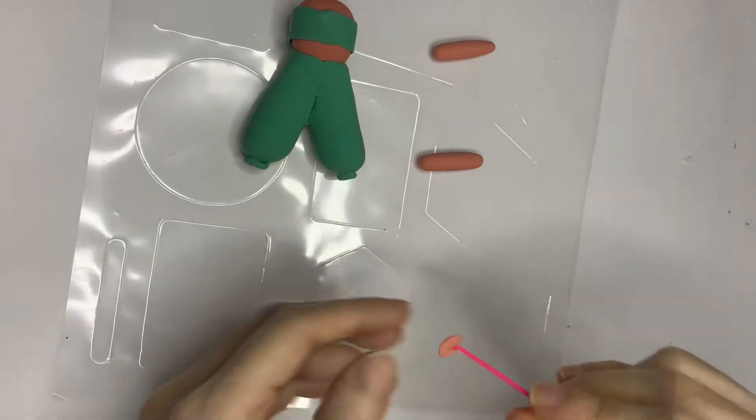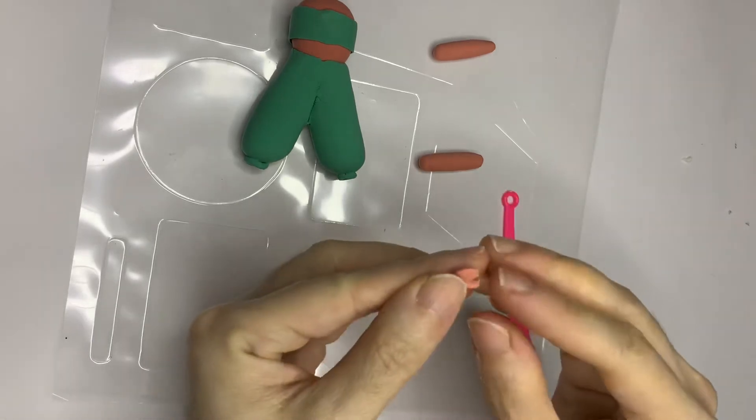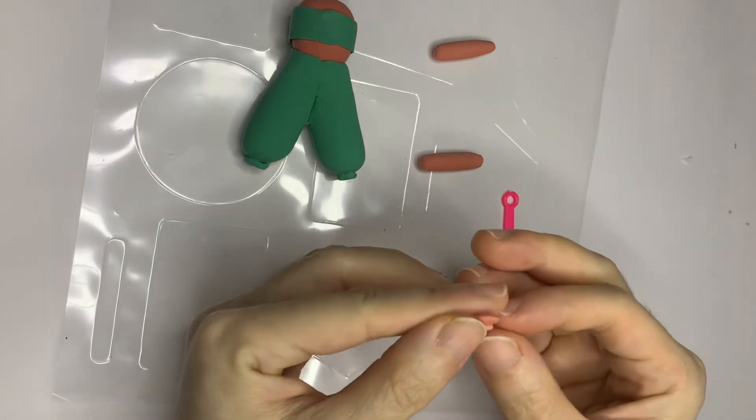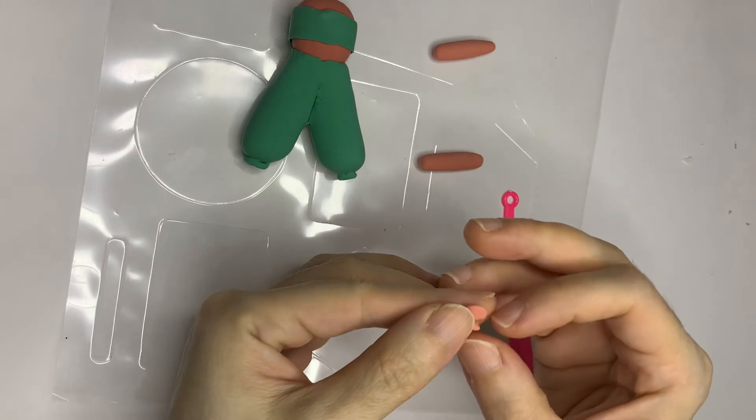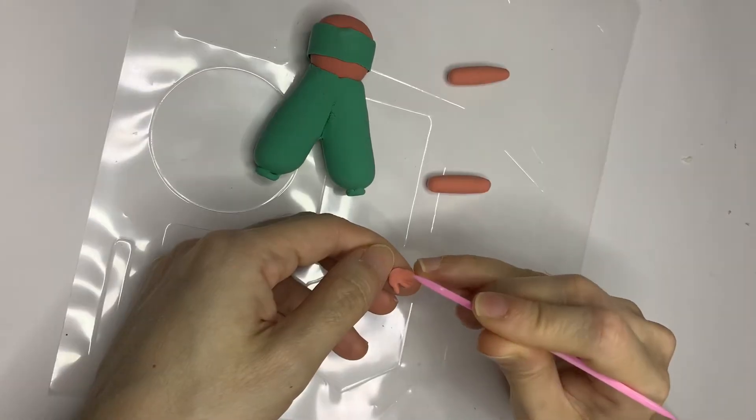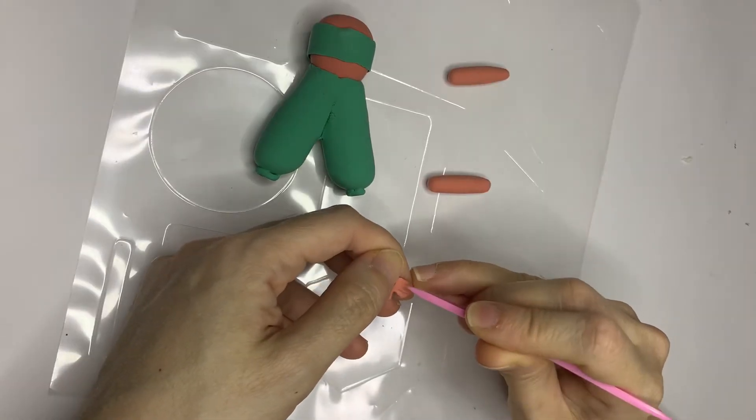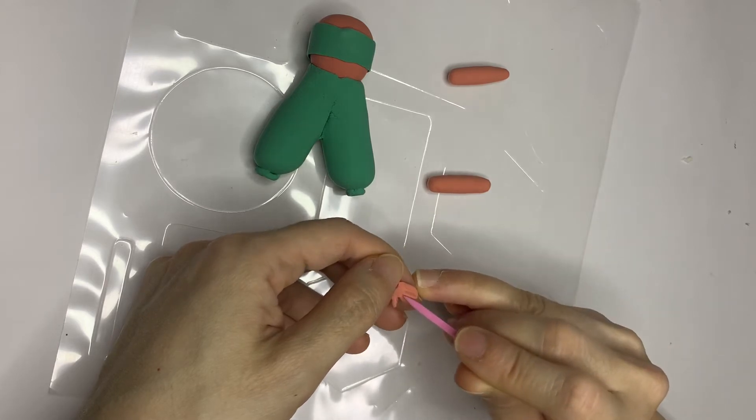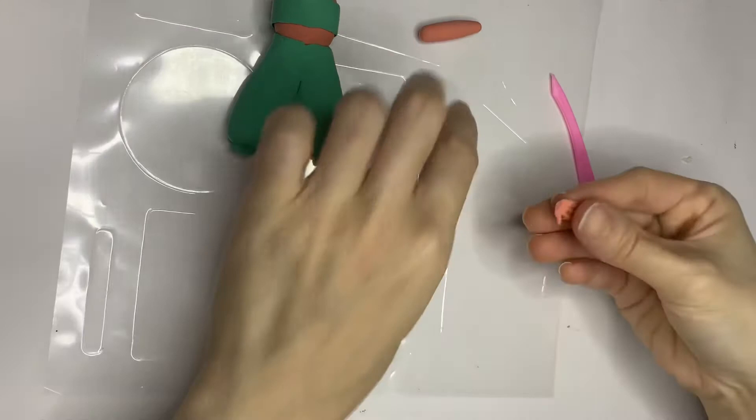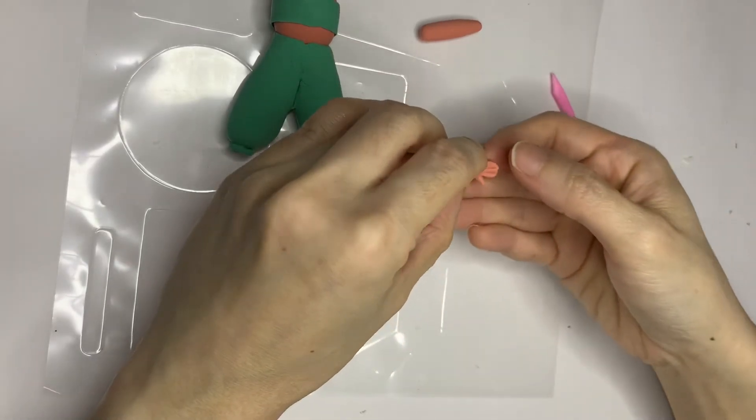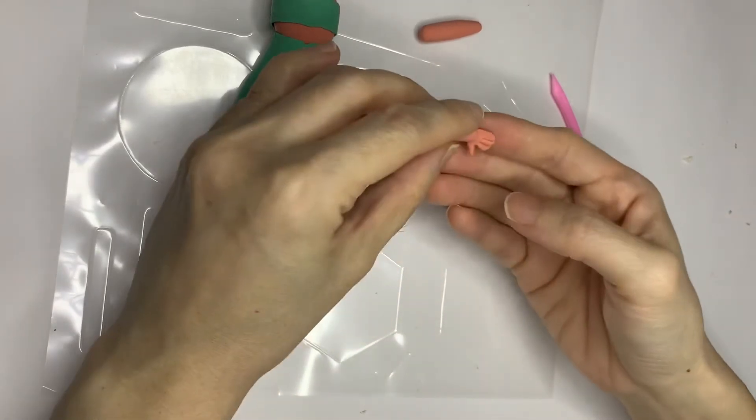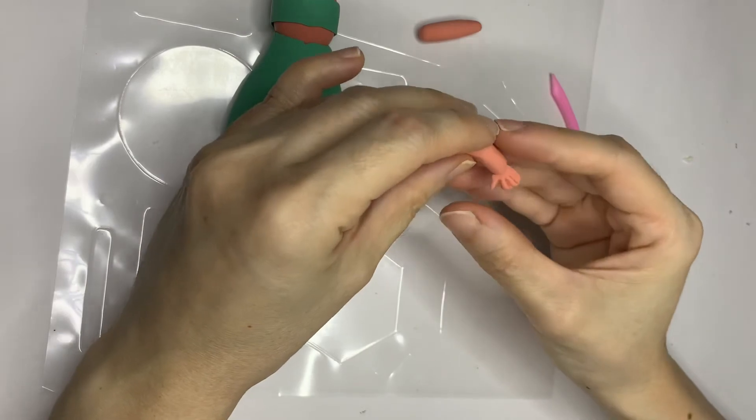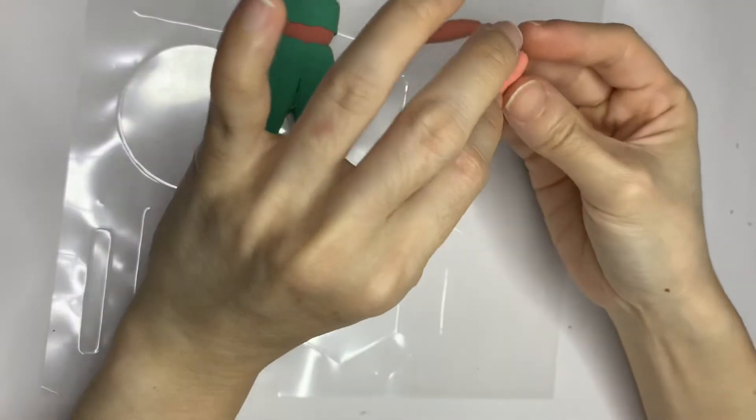Now let's make the hands. Make two flat circles. Cut through one end of the circle to make the thumb, then using the same knife, draw three more lines to form the four fingers. Attach the hand to the arms and then adjust the arm to the position that you like.